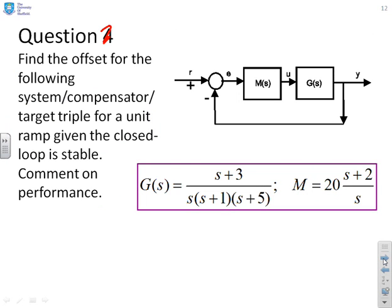Next question, I should say question three. Find the offset for the following system compensator, target triple, where the target is now a unit ramp. You're given that the closed loop is stable, but also you'll notice this bit at the end, comment on performance.